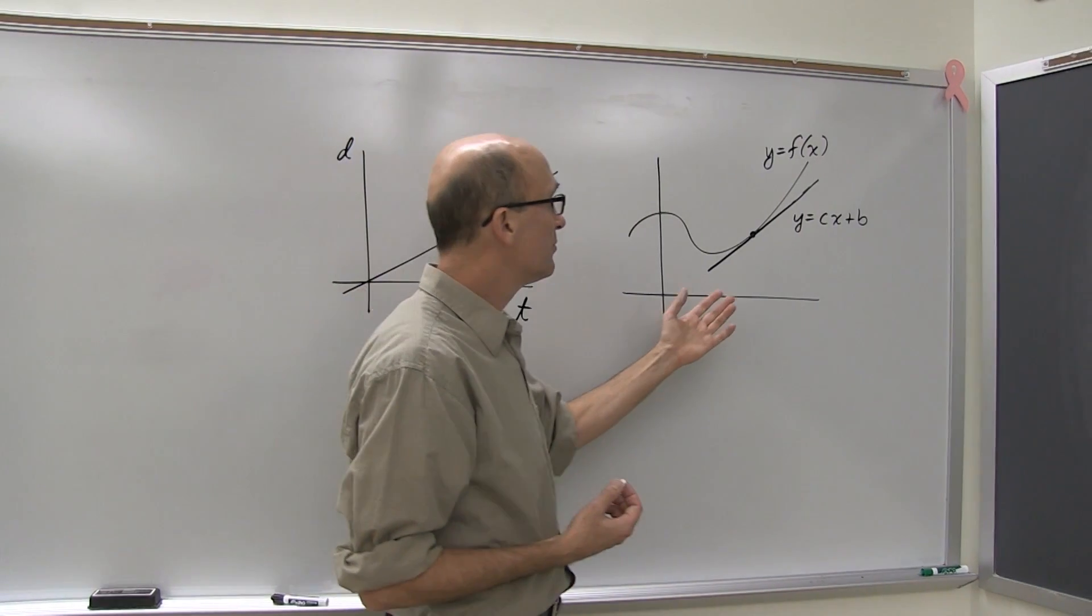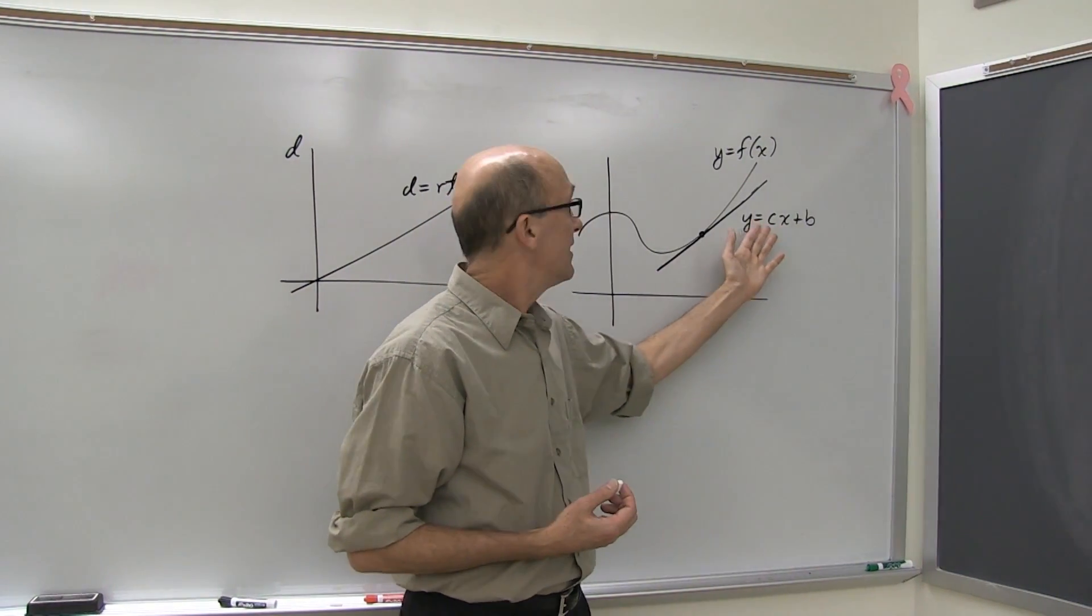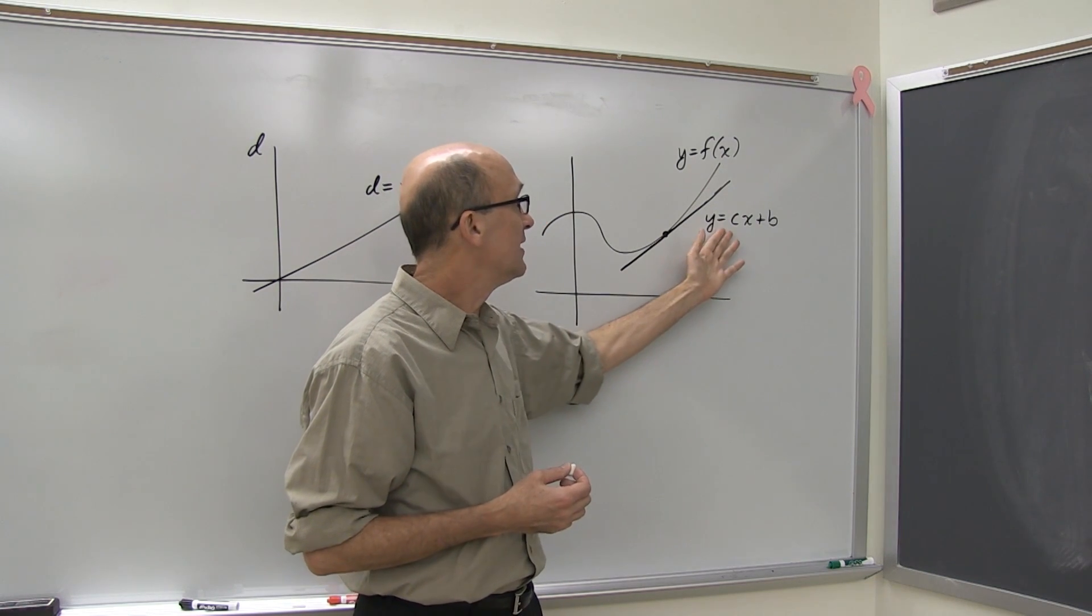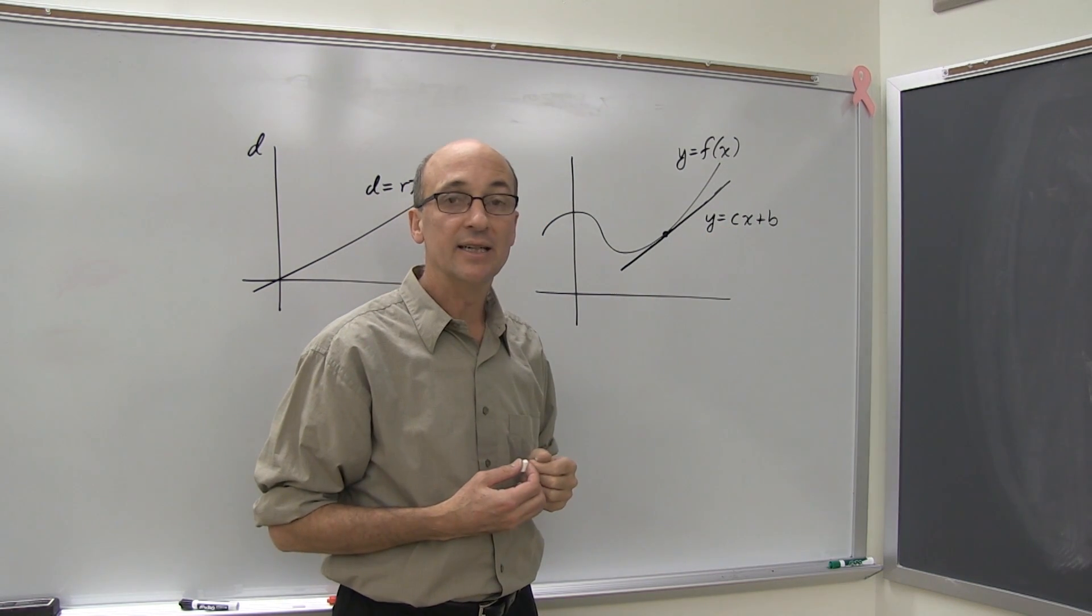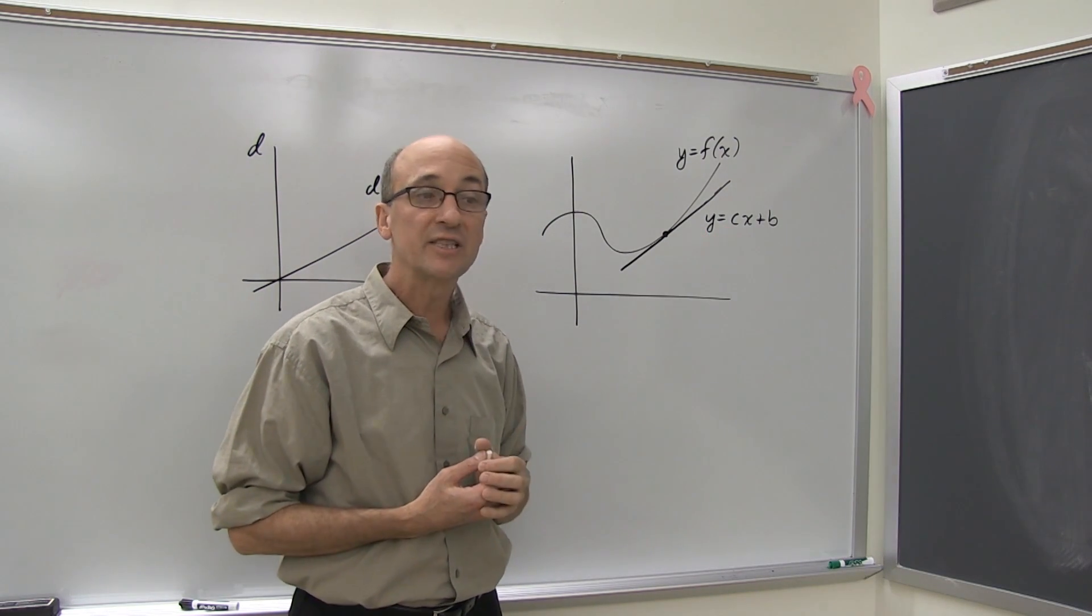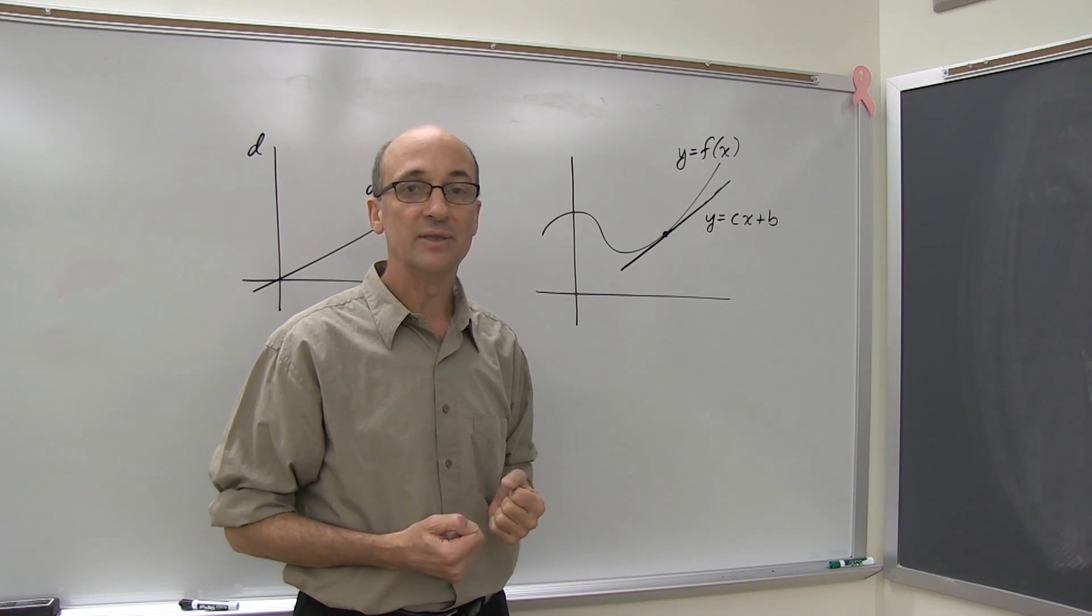And then in calculus one, you learn how to take an arbitrary, complicated function and approximate it by its tangent line using derivatives. But that tangent line is one of our simple functions. Why is it so effective? Because it's simple.